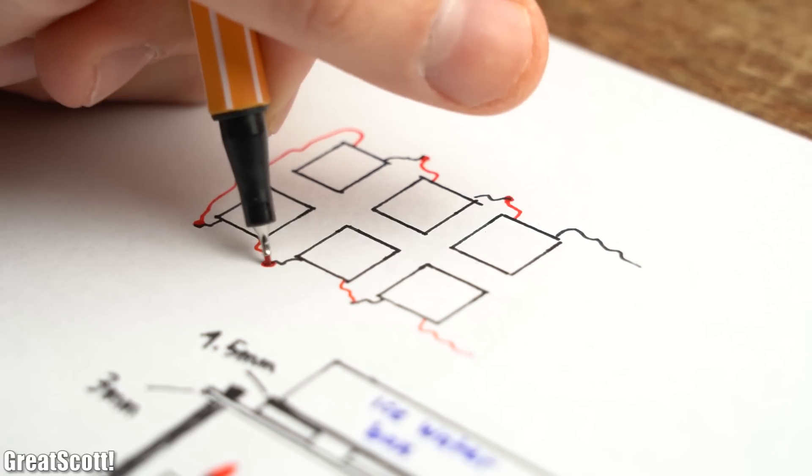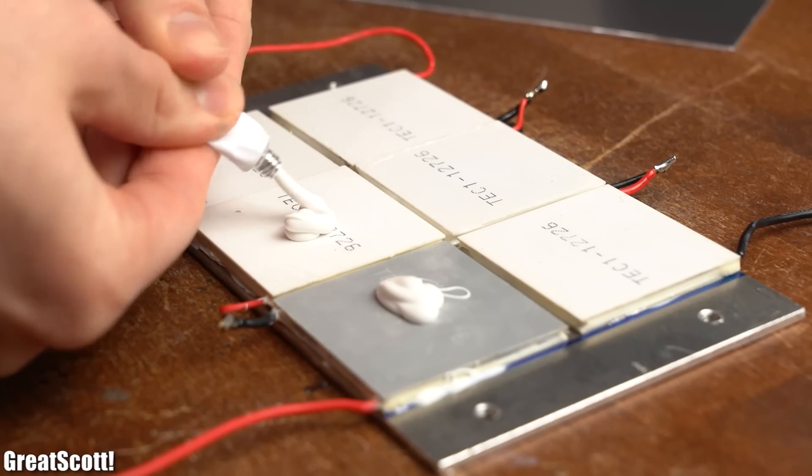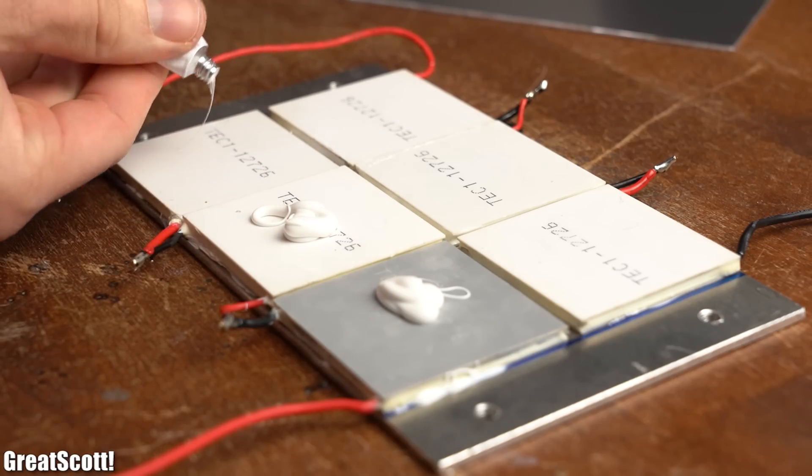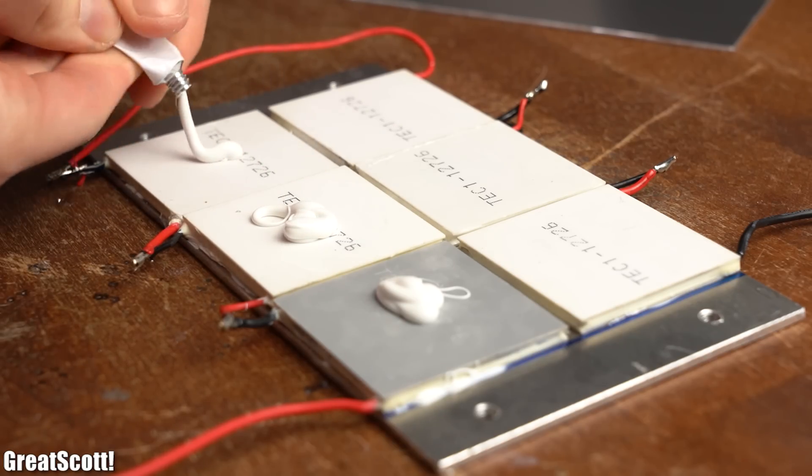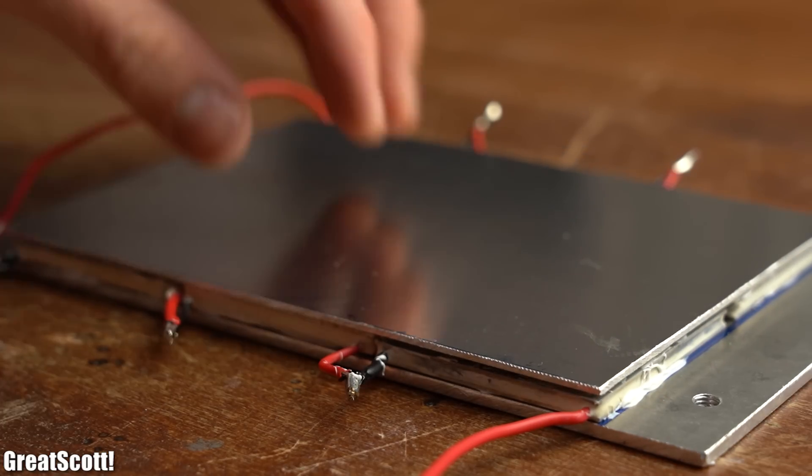Afterwards I added heatsink plaster to the labeled side of the modules and pressed the thinner aluminum heatsink onto them.